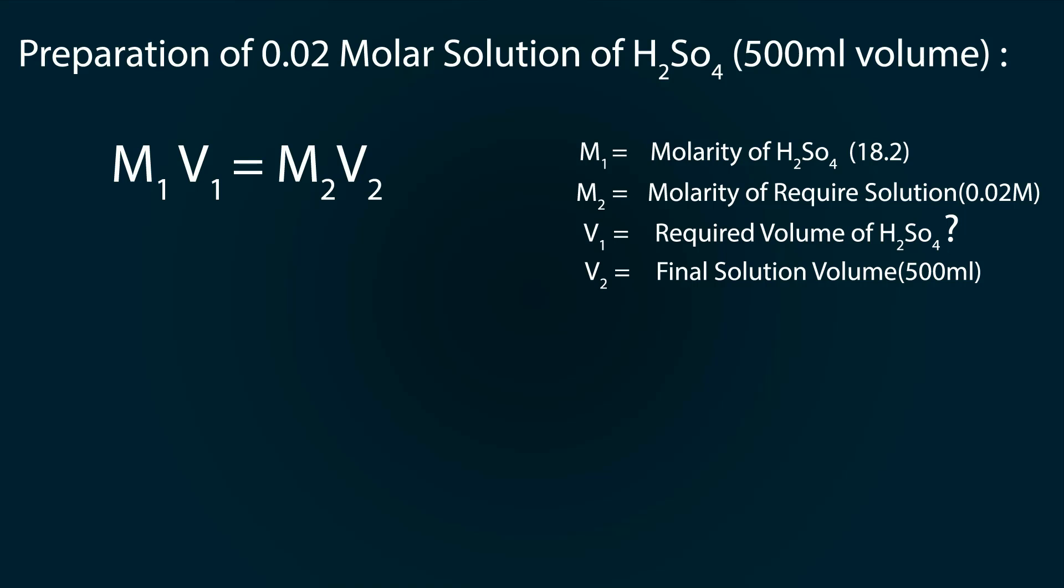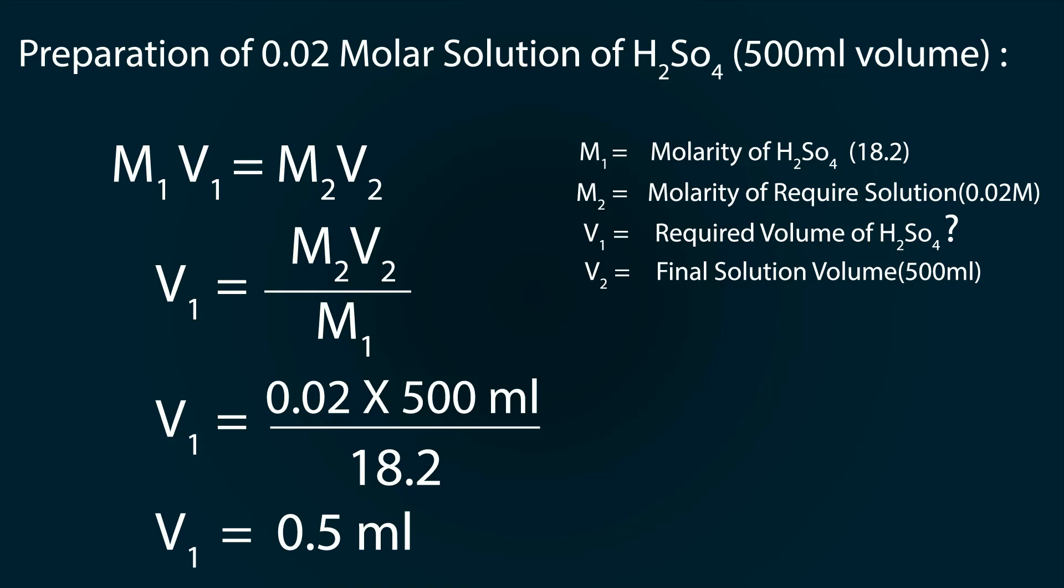So let's start our process. V1 equals M2V2 divided by M1. By putting the values: 0.02 multiplied by 500 milliliters divided by 18.2, we get our final volume as 0.5 milliliters, which we have to pipette out.